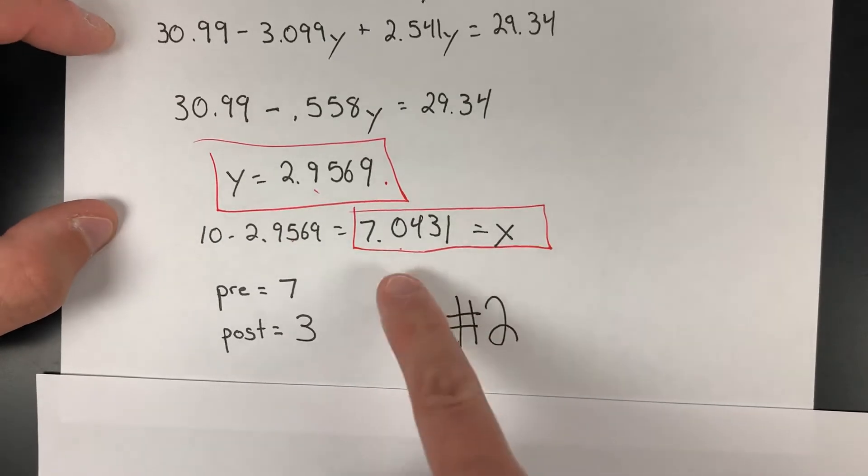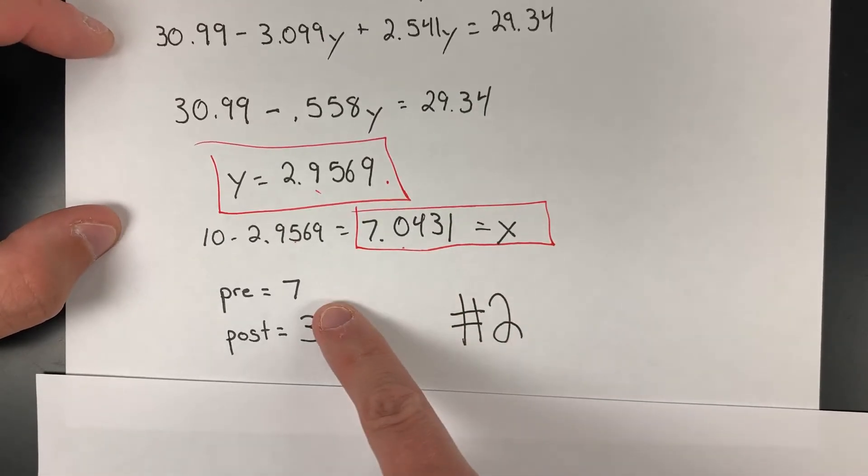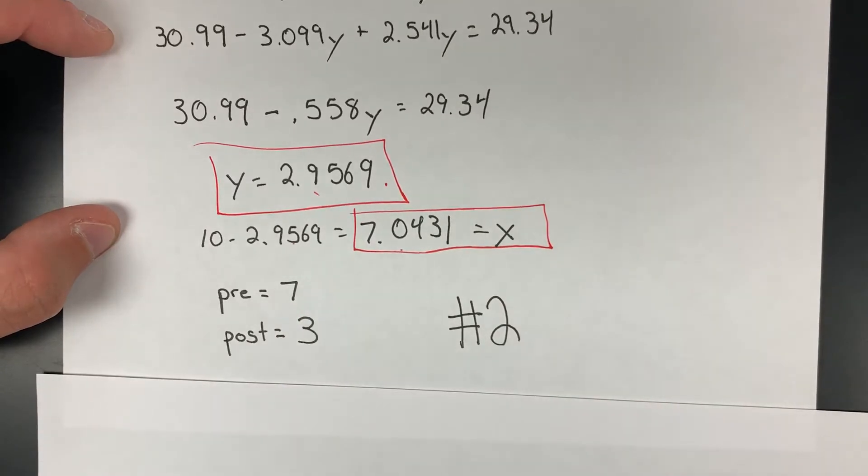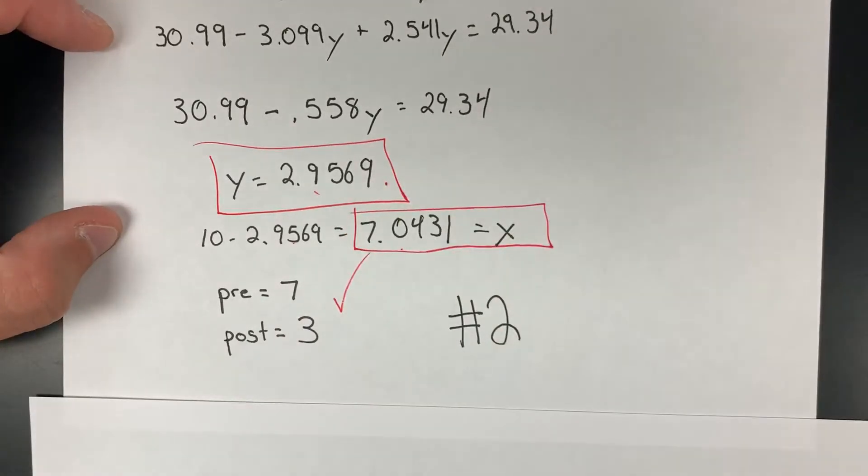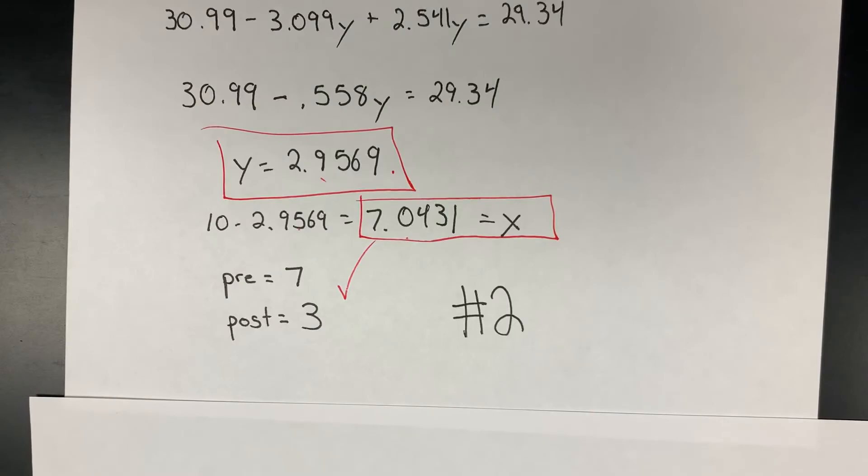So that pre, which we've defined as x, is 7, and the post, which we've defined as y, is 3. Just coming up with the raw quantities is your answer for question number two.